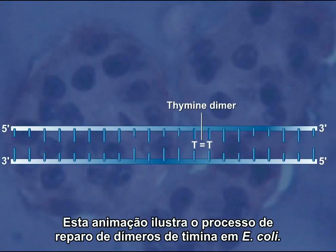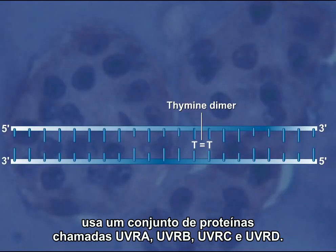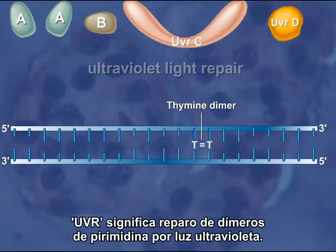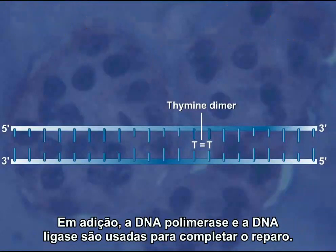This animation will illustrate the process of thymine dimer repair in E. coli. The nucleotide excision repair process uses a set of proteins called UVR-A, UVR-B, UVR-C, and UVR-D. UVR stands for ultraviolet light repair of pyrimidine dimers, but this system is also used to repair other types of DNA damage. In addition, DNA polymerase and DNA ligase are used to complete the repair.